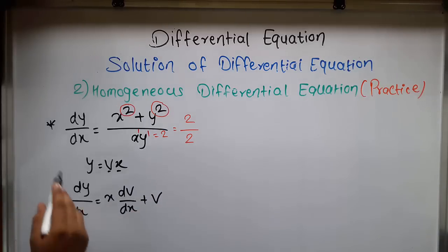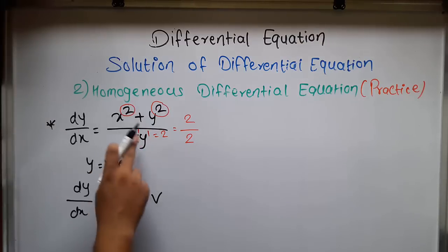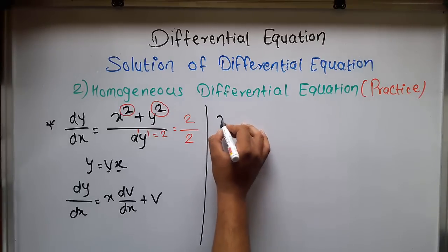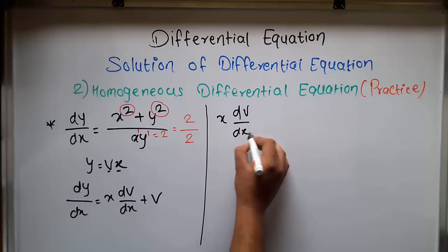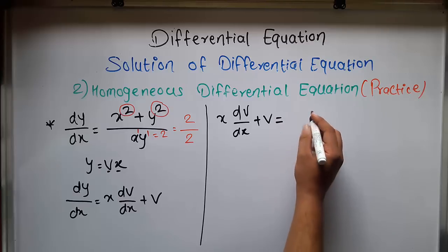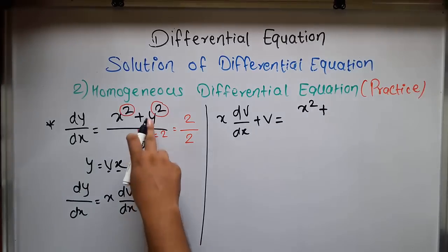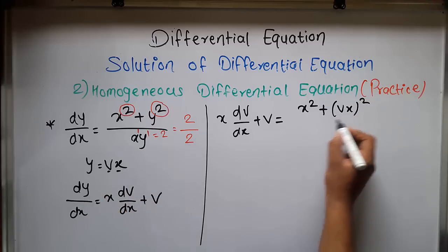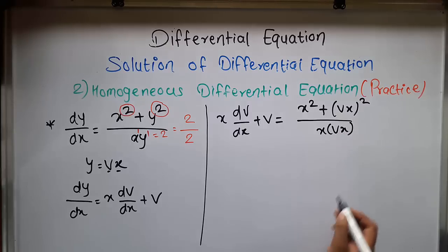Now, we put the value of dy/dx and the value of y into the equation. Our equation becomes x dv/dx plus v equal to x² plus, in place of y we put vx, so (vx)² upon x times vx.